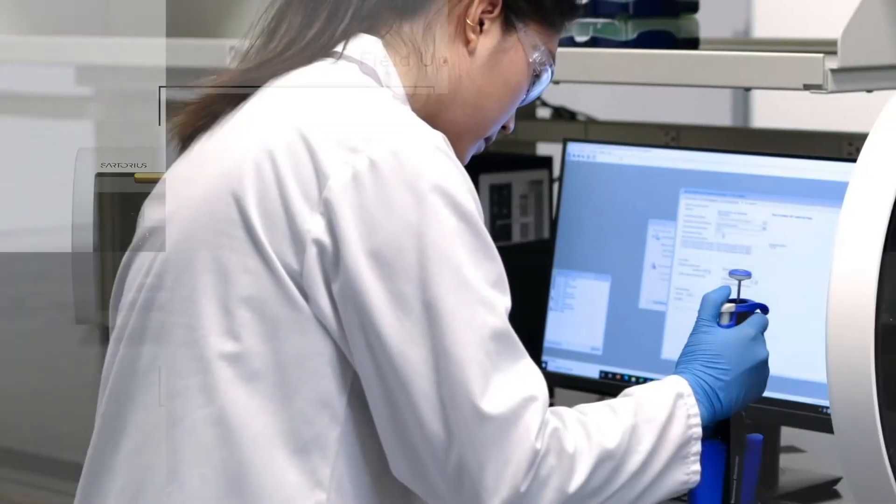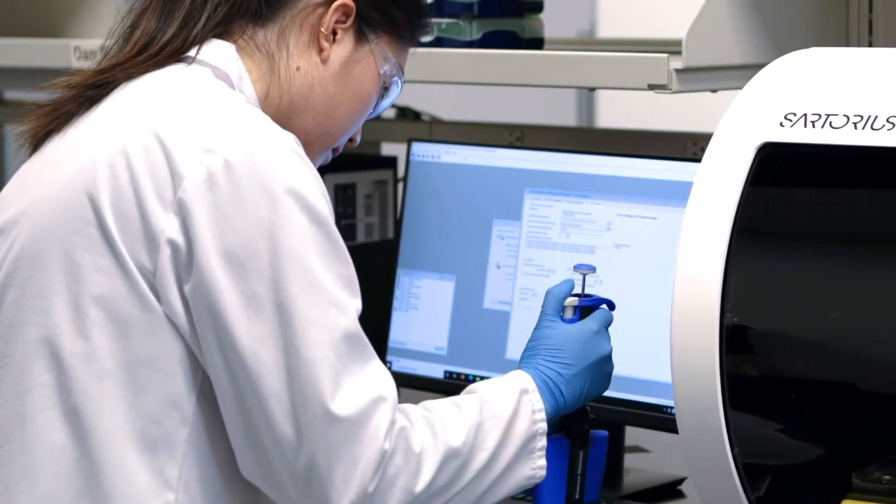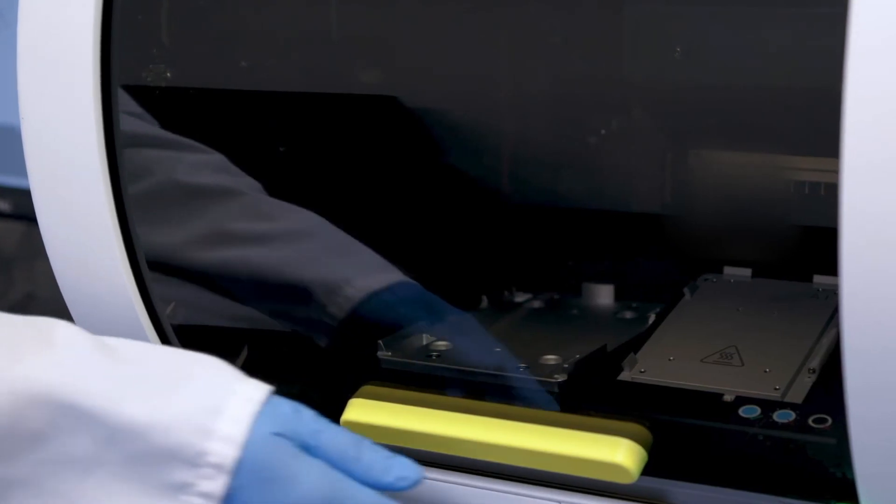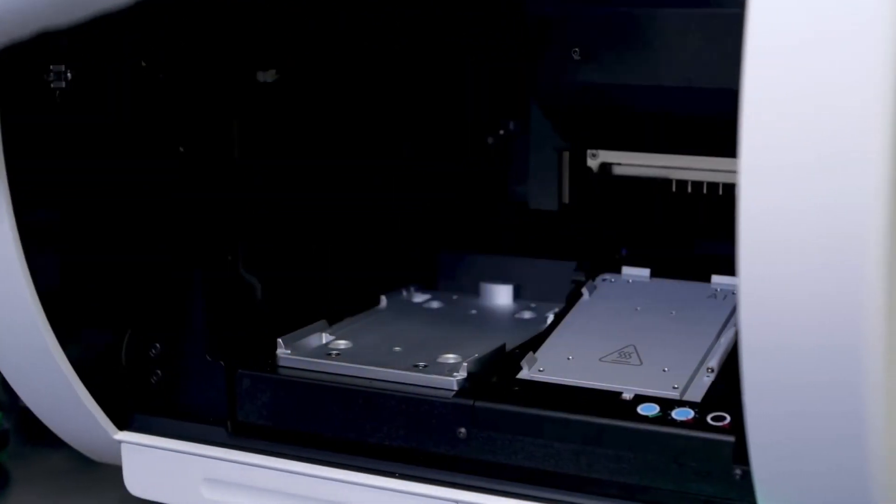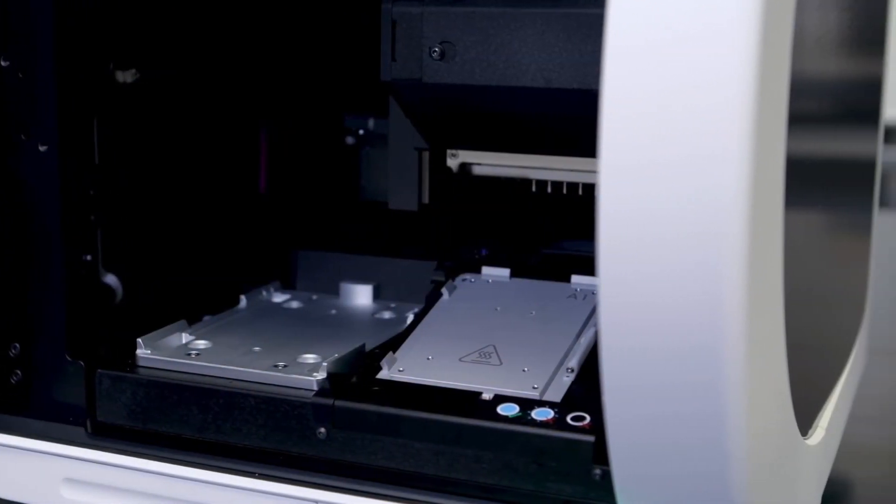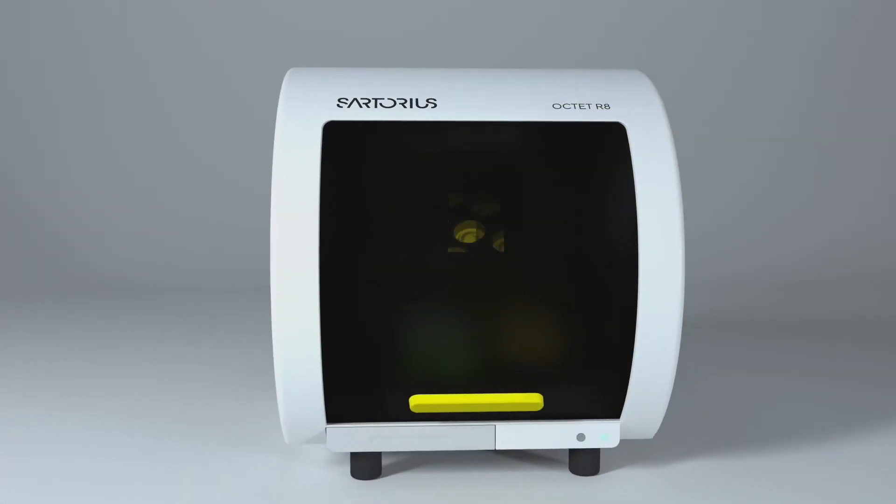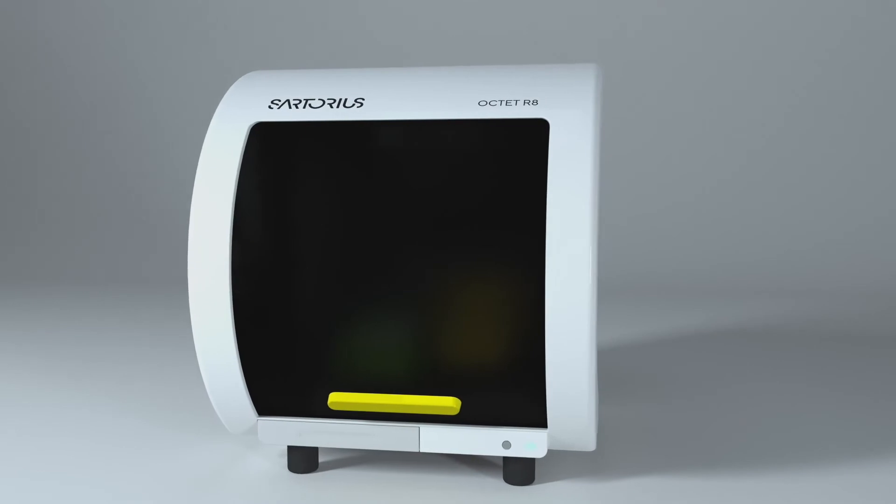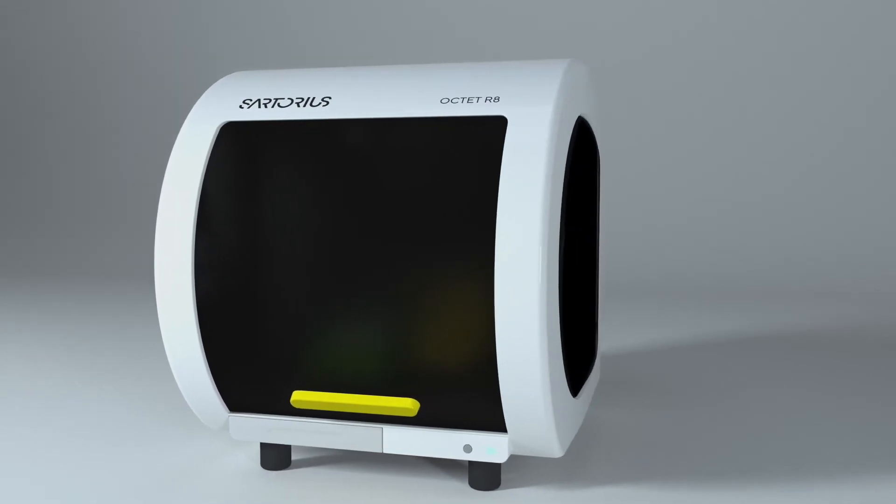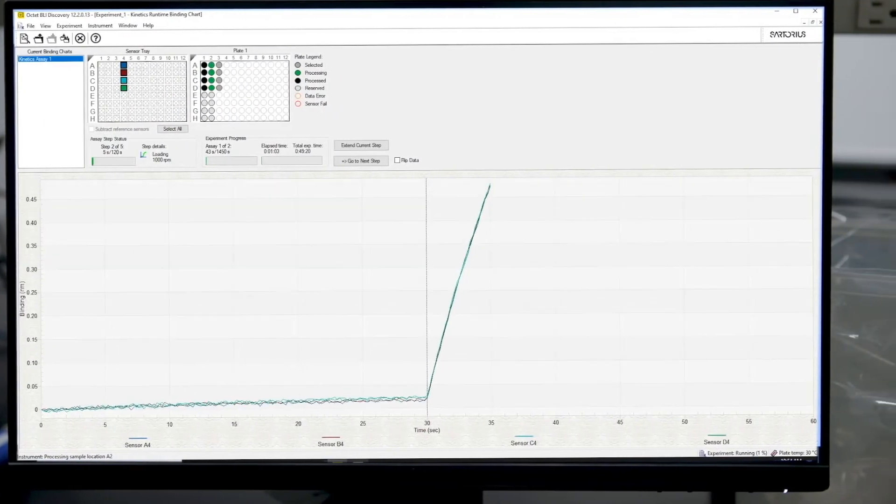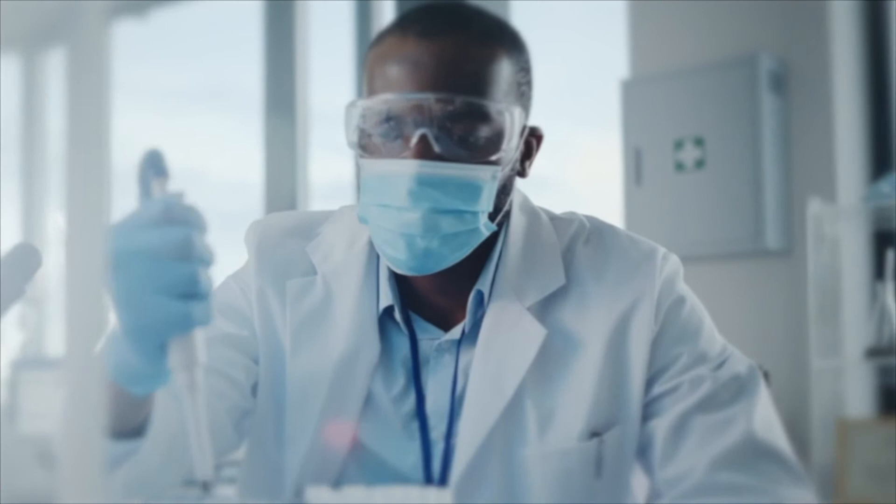For example, an Octet-R2 system can be converted to an Octet-R4 in the field, doubling your throughput instantly and offering the perfect balance between performance and price. You can even upgrade to an Octet-R8 to further increase throughput without the instrument ever leaving your lab. This helps to protect your investment and future-proof your workflows without the need to redesign assays and protocols as throughput increases.